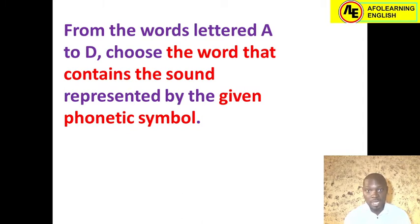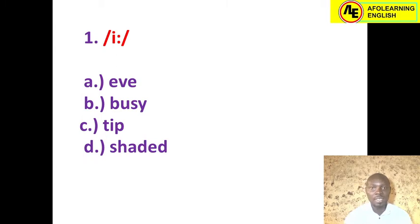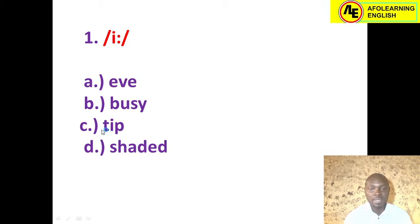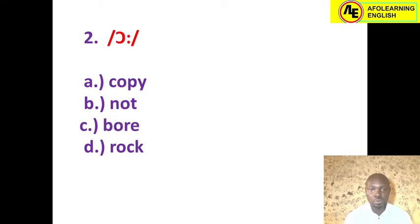From the words lettered A to D, choose the word that contains the sound represented by the given phonetic symbol. Number one: we are looking at the long /iː/. Option A has that sound. Option B is 'busy' — contains short /ɪ/, not long /iː/. Option C is 'tip' — another short vowel. Option D is 'shaded' — also short. Options B, C, D contain short /ɪ/, but we are looking for long /iː/, so the correct answer is option A.